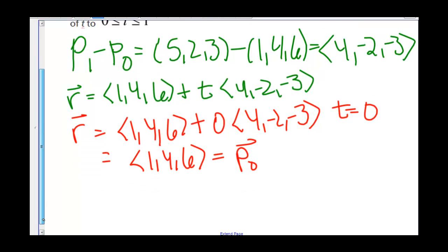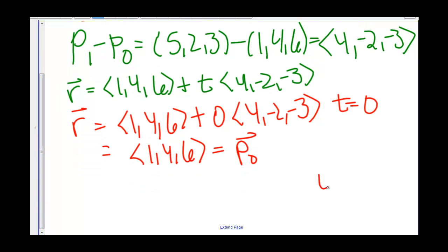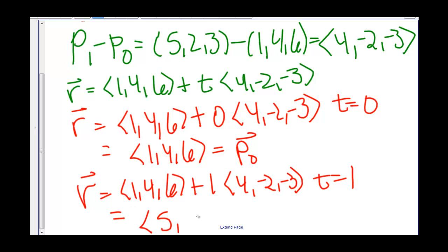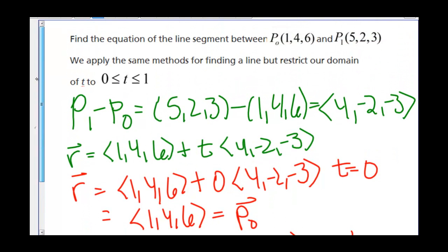Let's make sure that we end our segment at P1. If we have t equals 1, R = (1,4,6) + 1(4,-2,-3), so we get (5,2,3), and that is, in fact, P1.